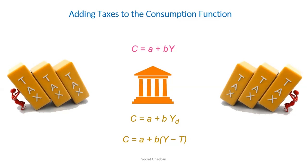When the government steps into the economy, C is equal to A plus BYD. So we can write the consumption function as C equals A plus B times (Y minus T), where (Y minus T) is the disposable income, YD.